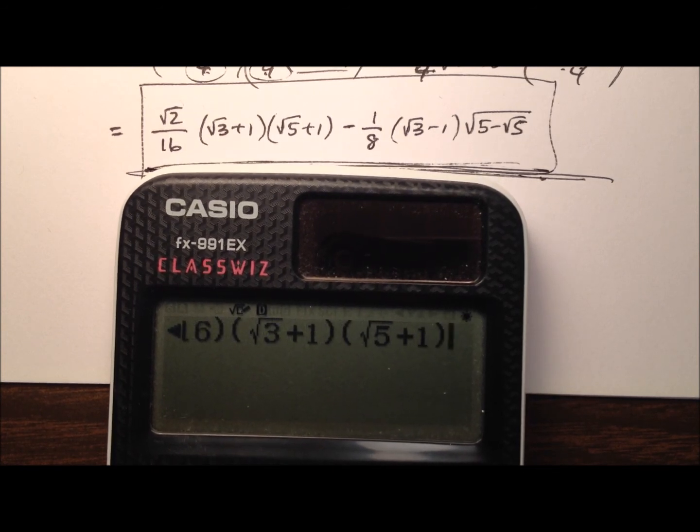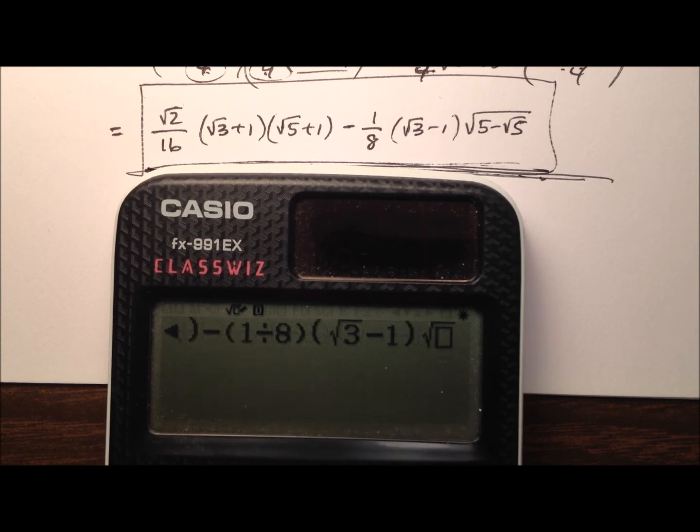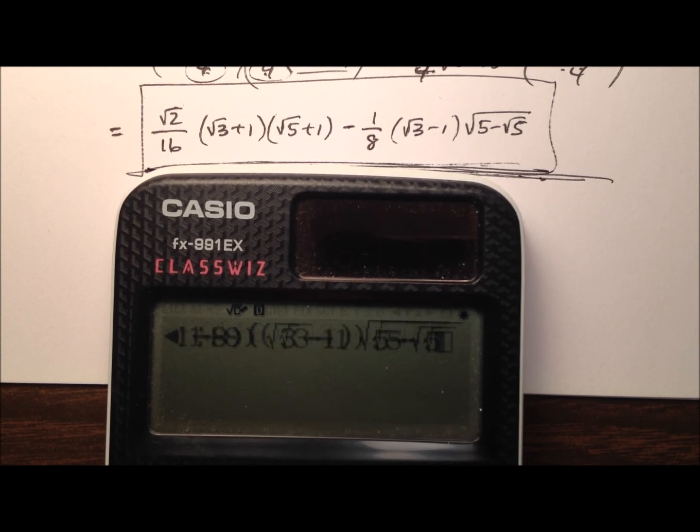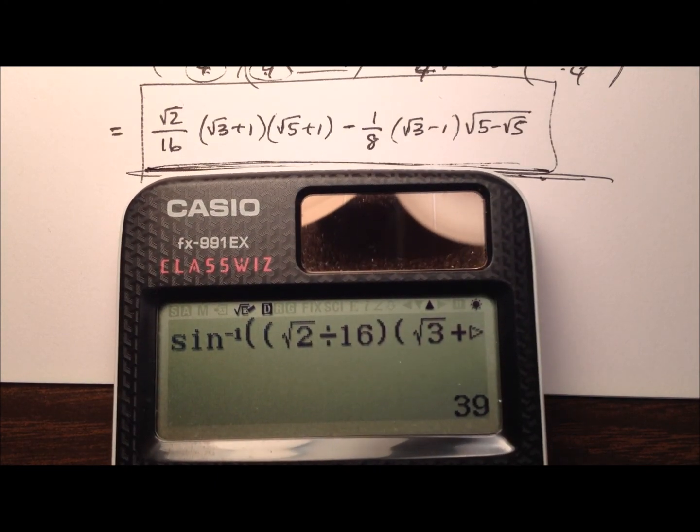And then from that we're subtracting, we'll start with our 1/8 and then the square root of 3 minus 1 and then this radical expression. Let's delete that one and get out of there real quick. There we go. So here we go and 39 degrees we do have.